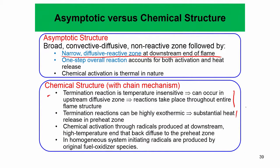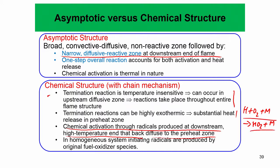These termination reactions can be highly exothermic. For example, the reaction H + O₂ + M → HO₂ + M — this three-body termination reaction — is very highly exothermic, and there will be substantial heat release in the preheat zone. Now, chemical activation through radicals is produced at the downstream high-temperature region and then back-diffuses to the preheat zone. The most important key species in this termination reaction is the H radical.